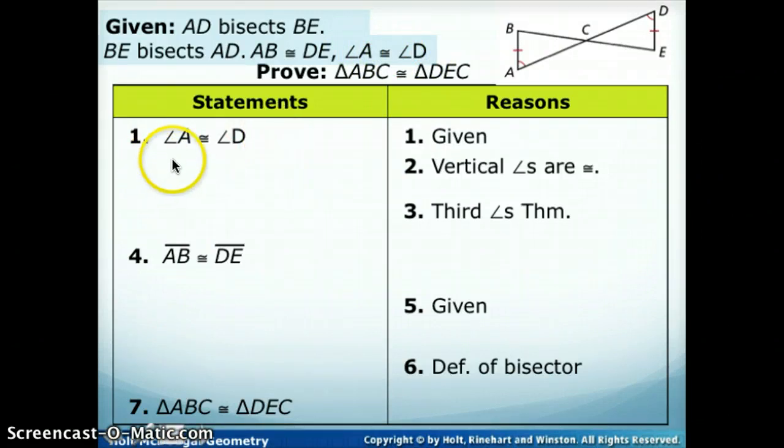The next one we're looking for the statement with the reason being vertical angles are congruent. So I have to know what vertical angles are. If you need to, you can look it up. But vertical angles, when two lines cross, are the non-adjacent angles, or the ones that cross from each other. So in our picture, we do have vertical angles. So if those are congruent, we want to say that BCA is congruent to DCE.